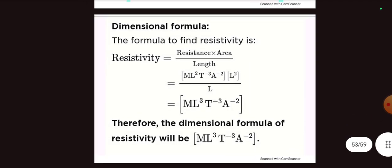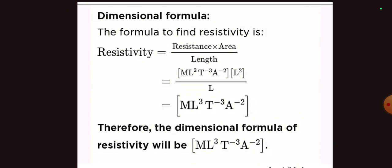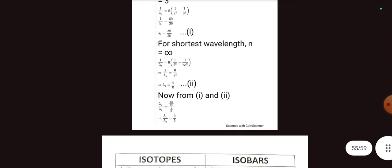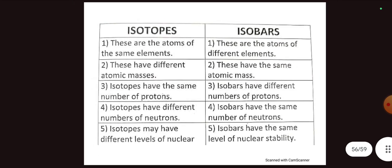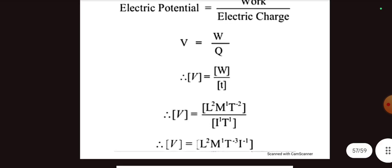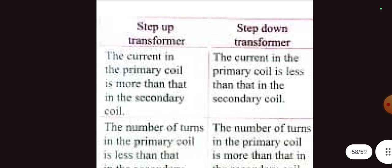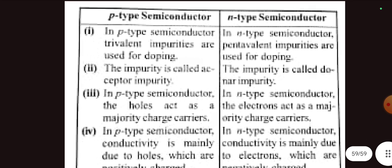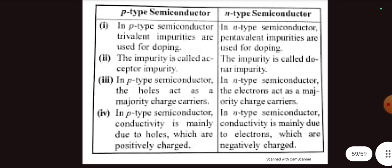Two marks: resistivity dimension formula, write the derive the dimension formula for resistivity. The problem, difference between isotope and isobar with example. The electric potential, dimension, derive the dimension of electric potential. Difference between step-up transformer and step-down transformer, two mark important. Then difference between p-type semiconductor and n-type semiconductor is important, important is 2024-5, very very important two or three mark selected question. Guaranteed question. Thank you.